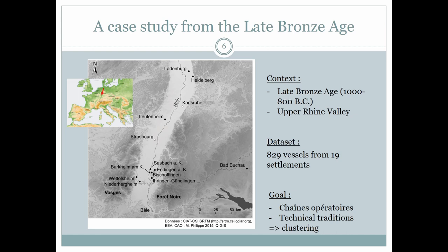Now a few words about the archaeological case study. We are in the upper Rhine valley during the Late Bronze Age. I selected 829 vessels from 19 settlements. The goal of this case study is to identify how vessels are made — to reconstruct the chain operatoire — and to identify which technical behaviors are transmitted, revealing traditions and social identities. I think this goal should be achieved by a cluster analysis.